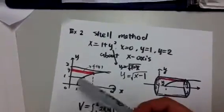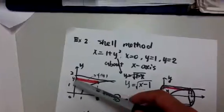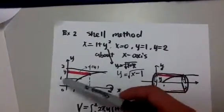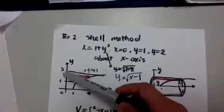Alright, so x equals 0 is y-axis. And y equals 1 is here, y equals 2 is there. So this is the region enclosed by those four curves.